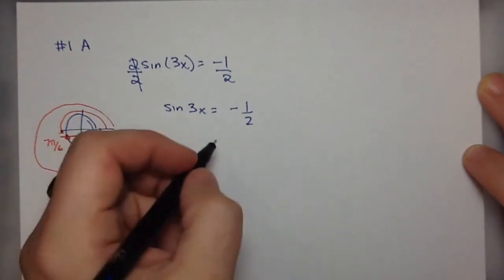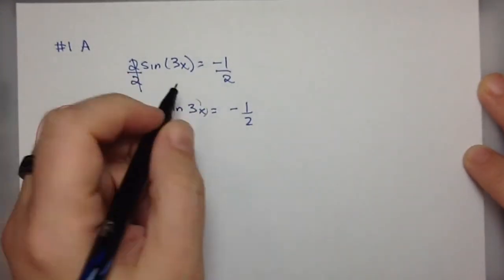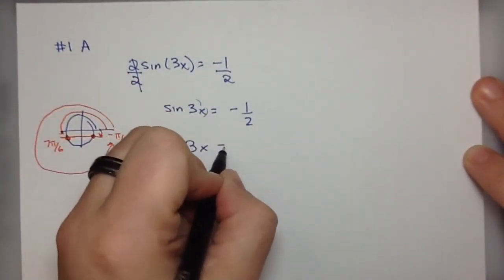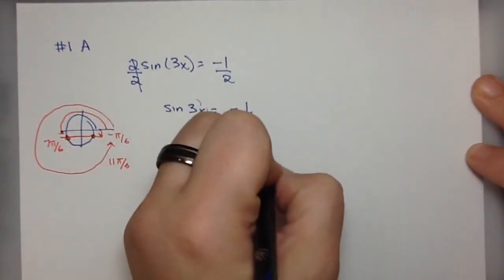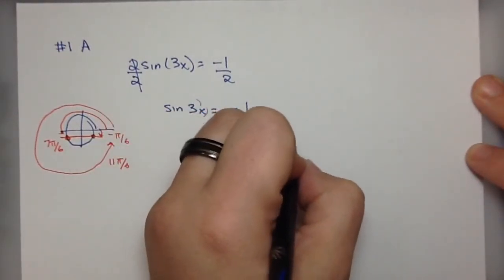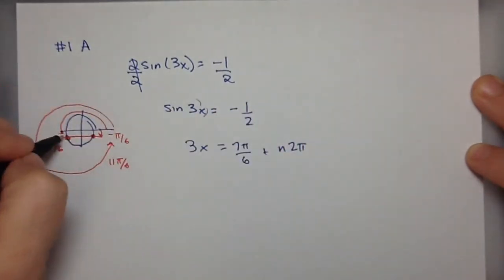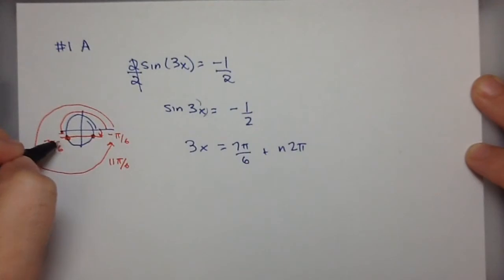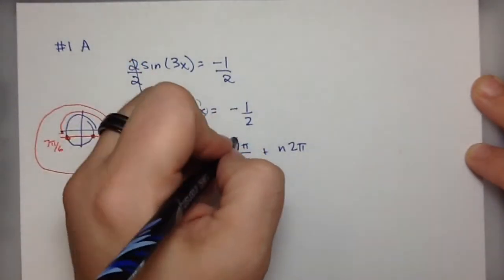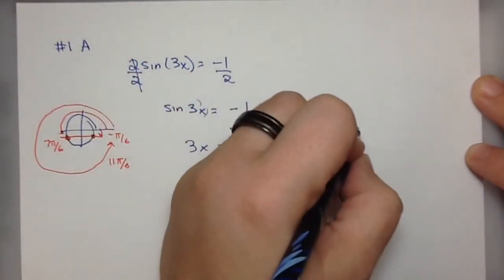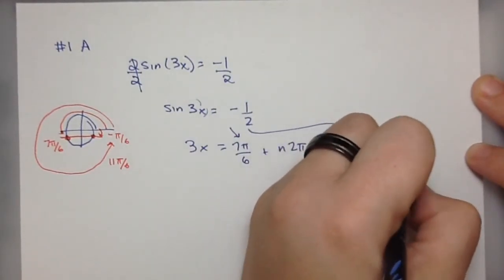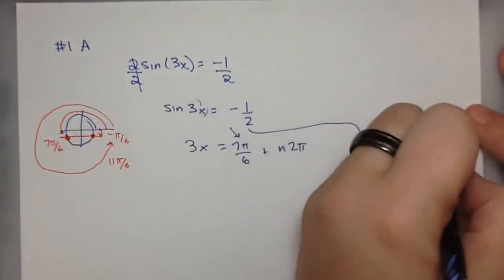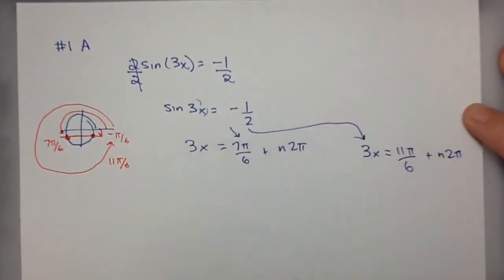Going back to our equation, we know that the angle 3x could be 7π over 6, or that plus 2π, or that plus 2 more π. So it could be 7π over 6 plus n times 2π, or 11π over 6 plus n times 2π.